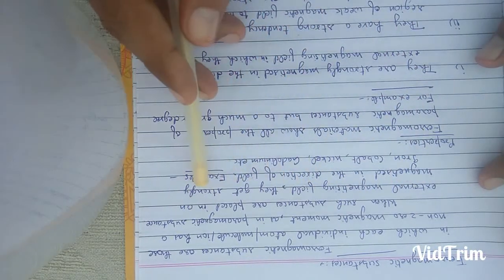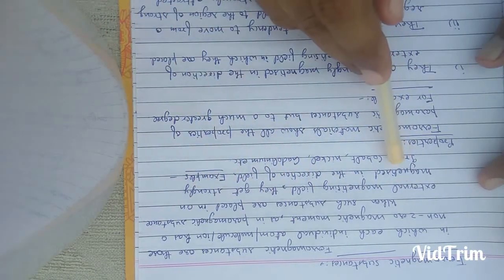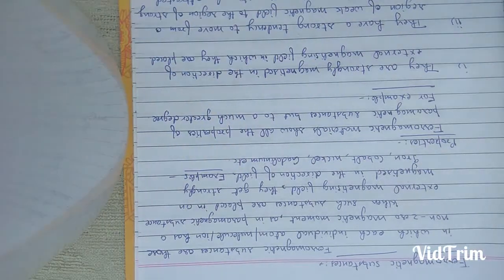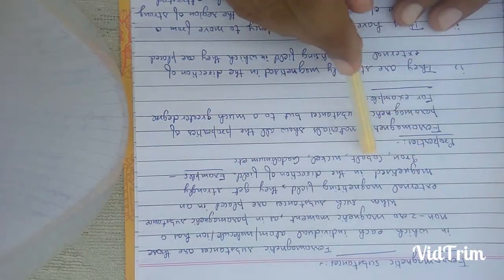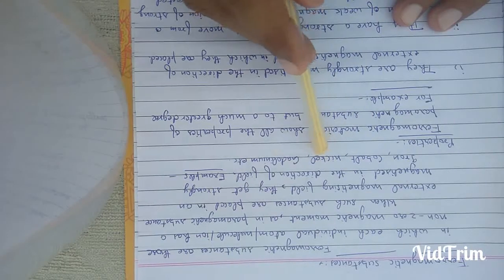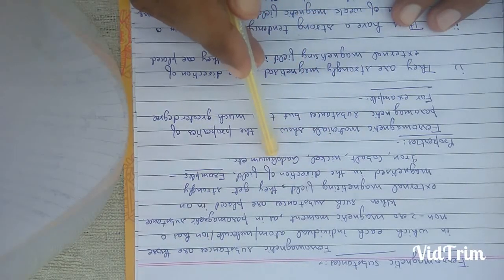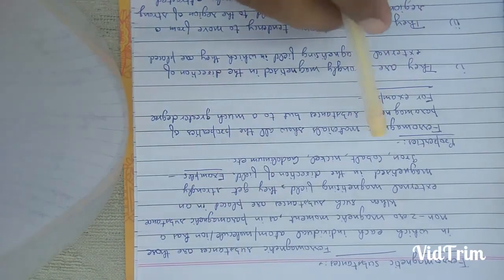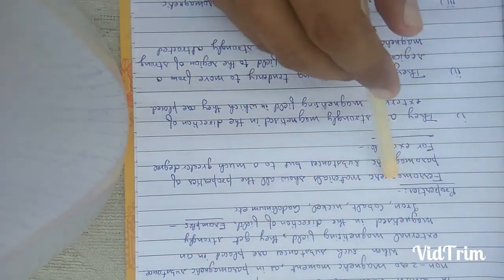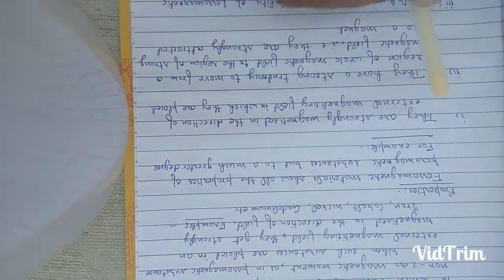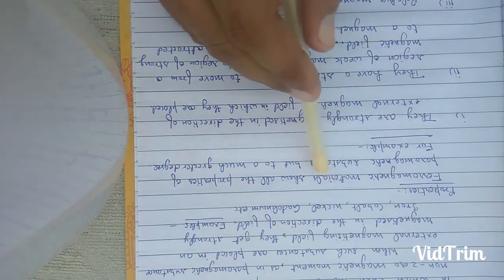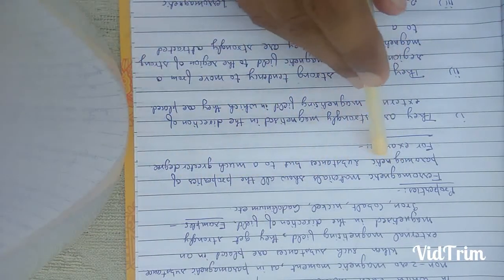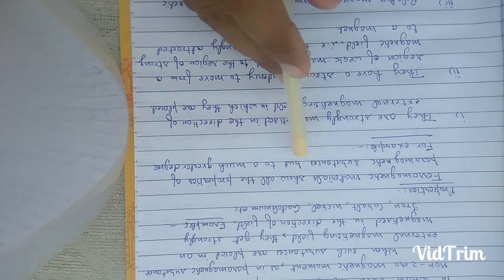Examples of ferromagnetic substances are iron, cobalt, nickel, gadolinium, and their alloys. Now we will study properties of ferromagnetic substances. Ferromagnetic materials show all the properties of paramagnetic substances, but to a much greater degree.